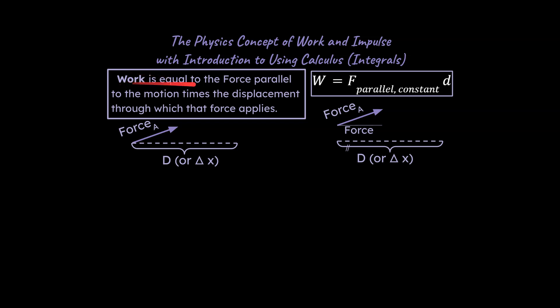First of all, we do need to review what we mean by work. Work in a physics sense is equal to the force parallel to an object in motion times the displacement through which that force applies. So we could say work is force parallel times d, where d is like a change in x, and we can even also use r as a variable here to talk about this, as we'll see in a minute.